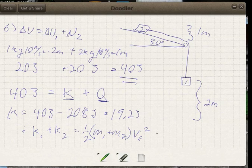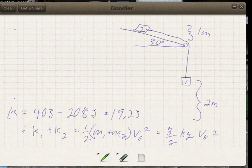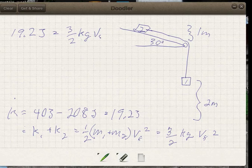So that's 3. We have 3 halves kilograms times v final squared. So our 19.2 joules is equal to 3 halves kilogram v final squared.